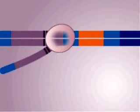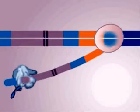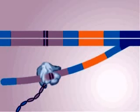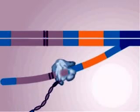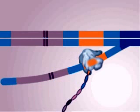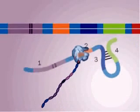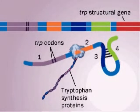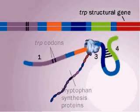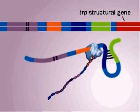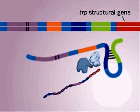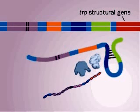If, however, tryptophan-charged tRNAs are plentiful — there is lots of tryptophan in the cell — the ribosomes read through region 1 quickly, which allows region 3 and newly transcribed region 4 to pair. This stem and loop terminates transcription, and the structural genes are not transcribed. Tryptophan is not produced, and its concentration in the cell decreases.